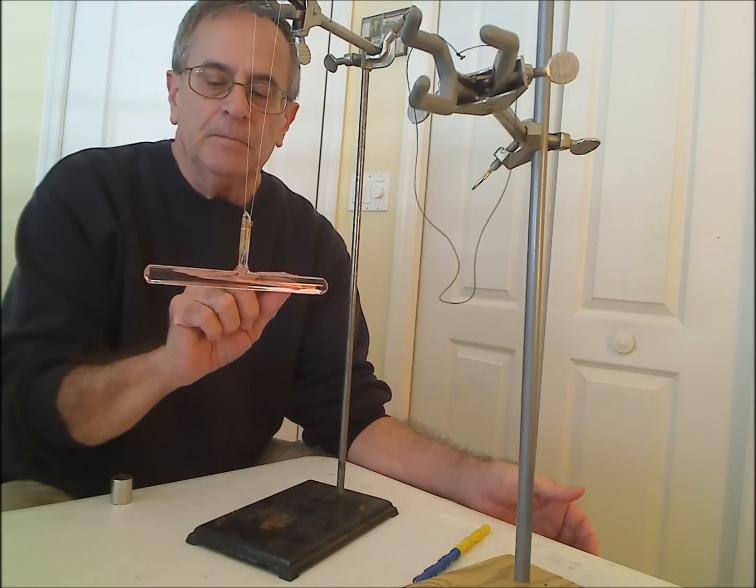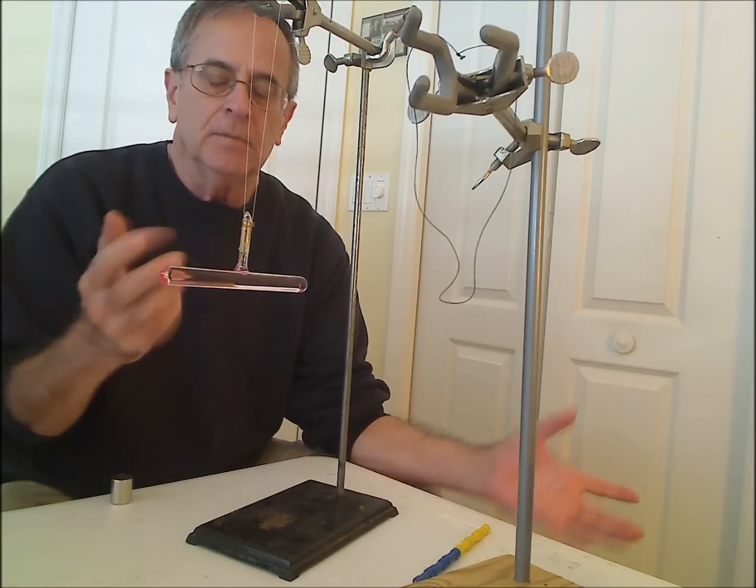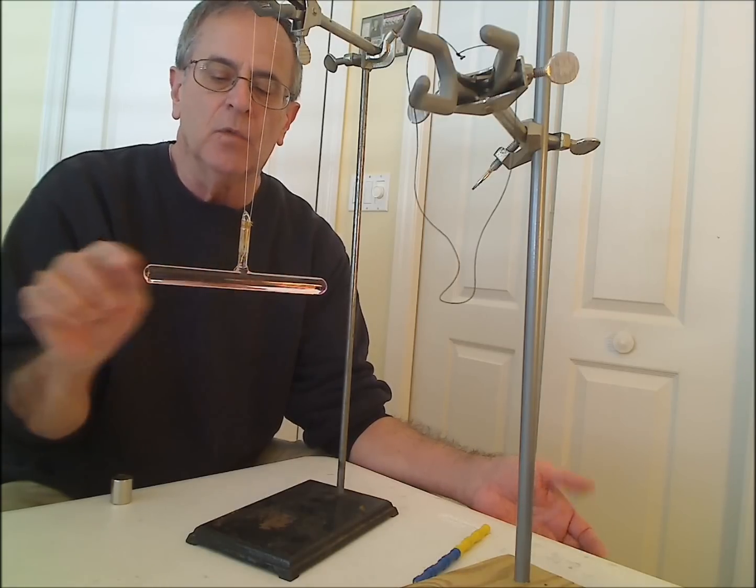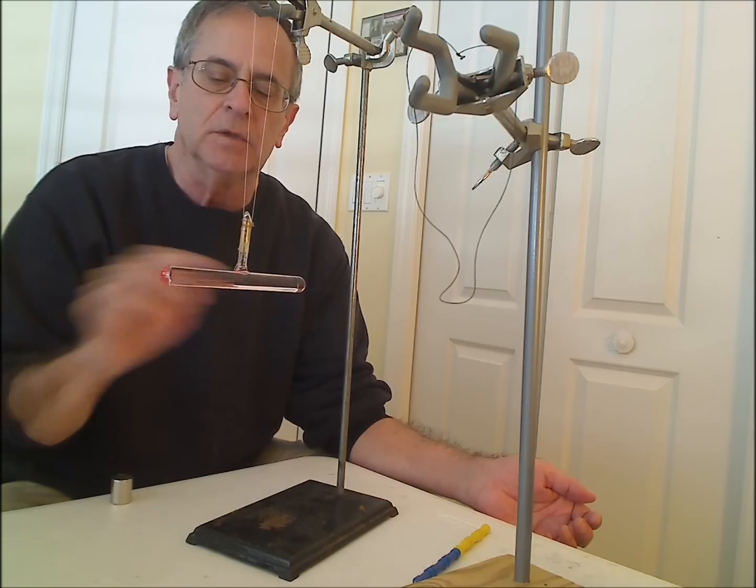In a paramagnetic material, by the way, this is manganese chloride, MnCl2 dissolved in water. It's a saturated solution, close to saturated.